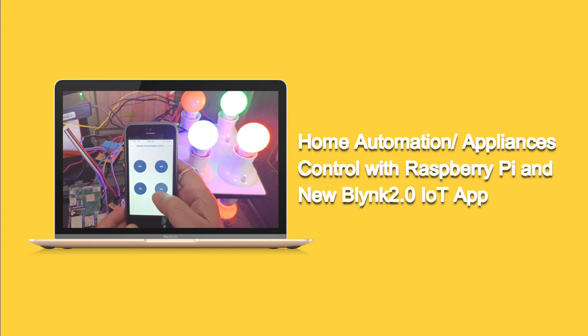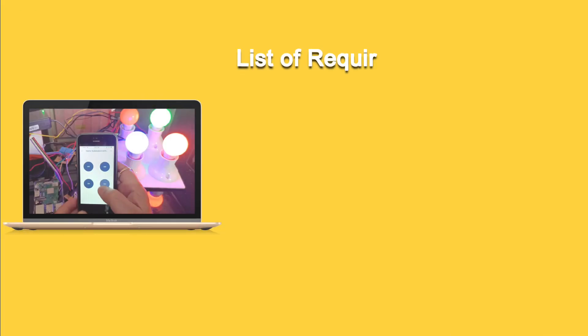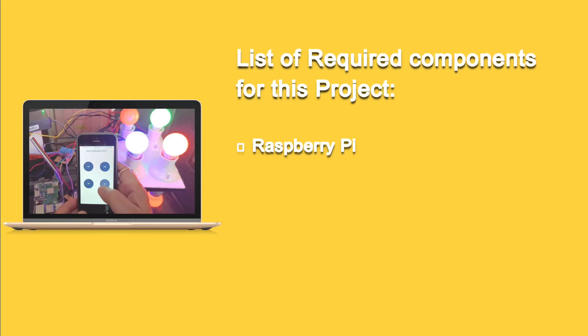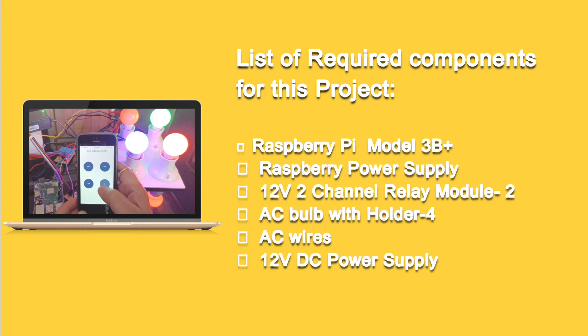With this project, you will be able to control your home's lighting and appliances right from your smartphone. In this step-by-step tutorial, we will be using a Raspberry Pi Model 3B+, a Raspberry Pi power supply, two 12V 2-channel relay modules, AC bulbs with holders, AC wires, a 12V DC power supply, and some jumper wires.